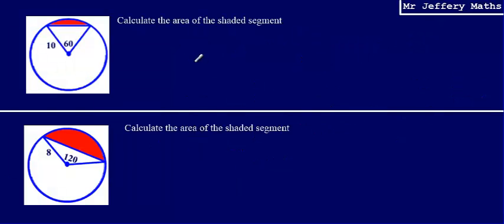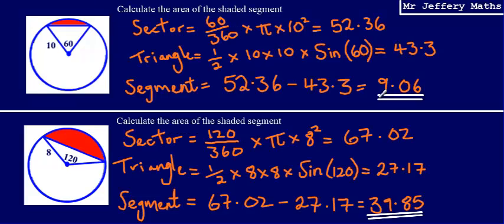Here are two questions for you to practise on. If you pause the video now, attempt the questions, then press play to see the answers. The answers are: 9.06 to three significant figures, and the second answer to two decimal places — if you gave it to three significant figures, you could say that's 39.9.